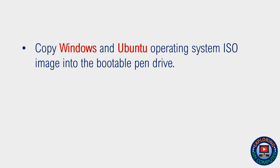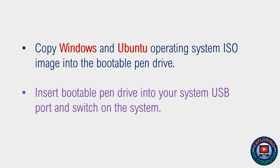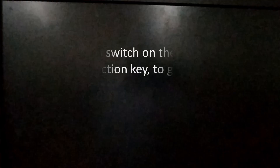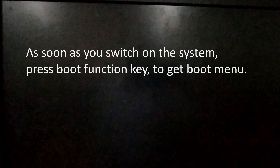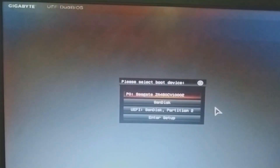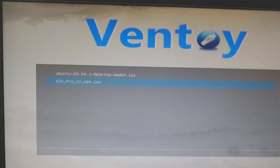Copy the Windows and Ubuntu operating system ISO images into the bootable pen drive. Insert the bootable pen drive into your system's USB port and switch on the system. As soon as you switch on the system, press the boot function key to get the boot menu and select the pen drive as the bootable device as shown on the screen.